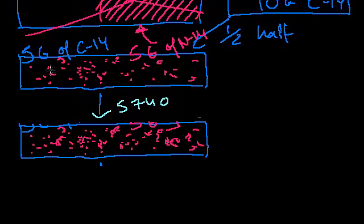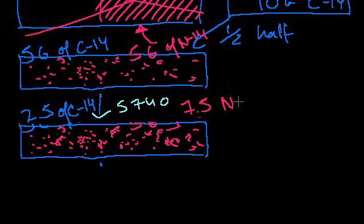So now we're only left with 2.5 grams of C-14. And how much nitrogen-14? Well, we have another 2 and a half went to nitrogen. So now we have 7 and a half grams of nitrogen-14. And we could keep going further and further into the future. And after every half-life, 5,740 years, we will have half of the carbon that we started with.